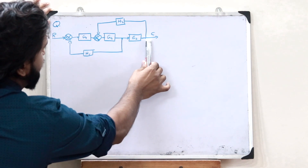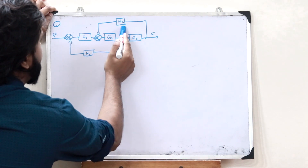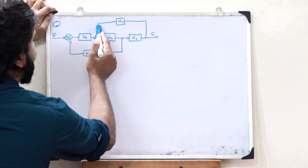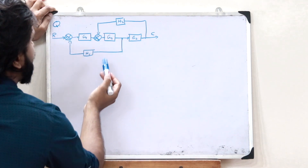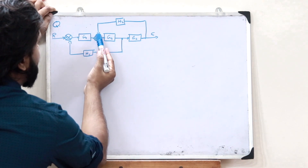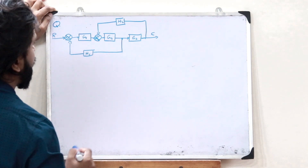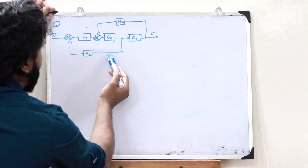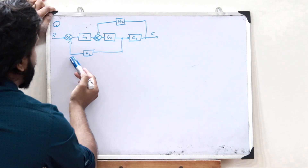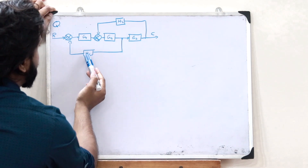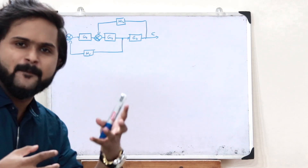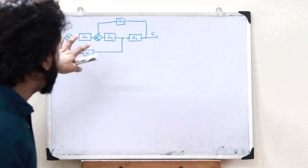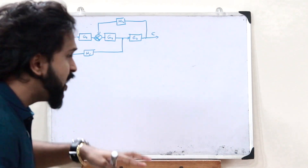From G3, a feedback element H2 is provided, and this H2 is in negative feedback. From G2, another feedback H1 is also given. The main strategy behind using these rules is to organize the diagram so that we have clear feedback elements.